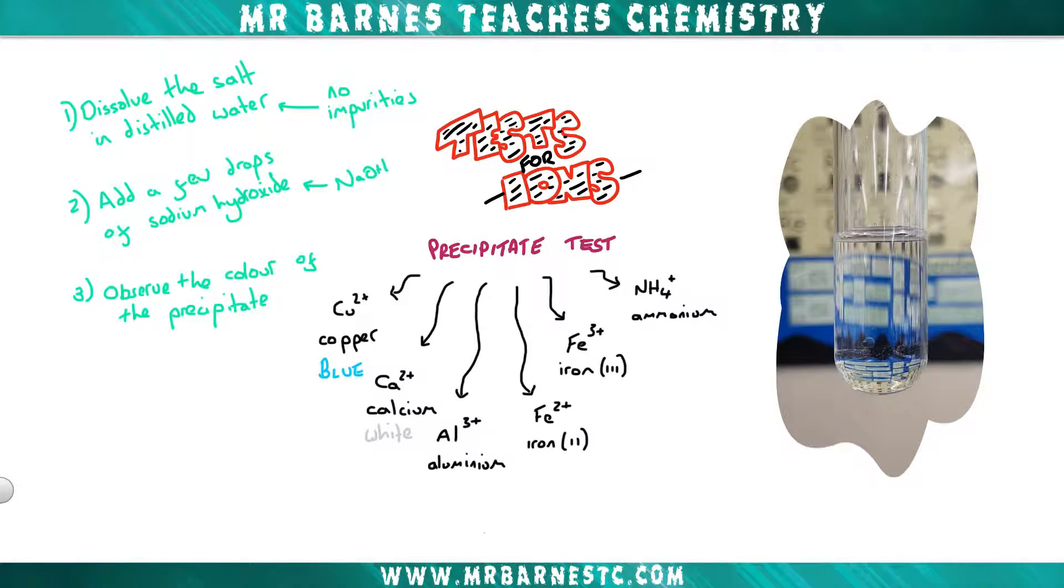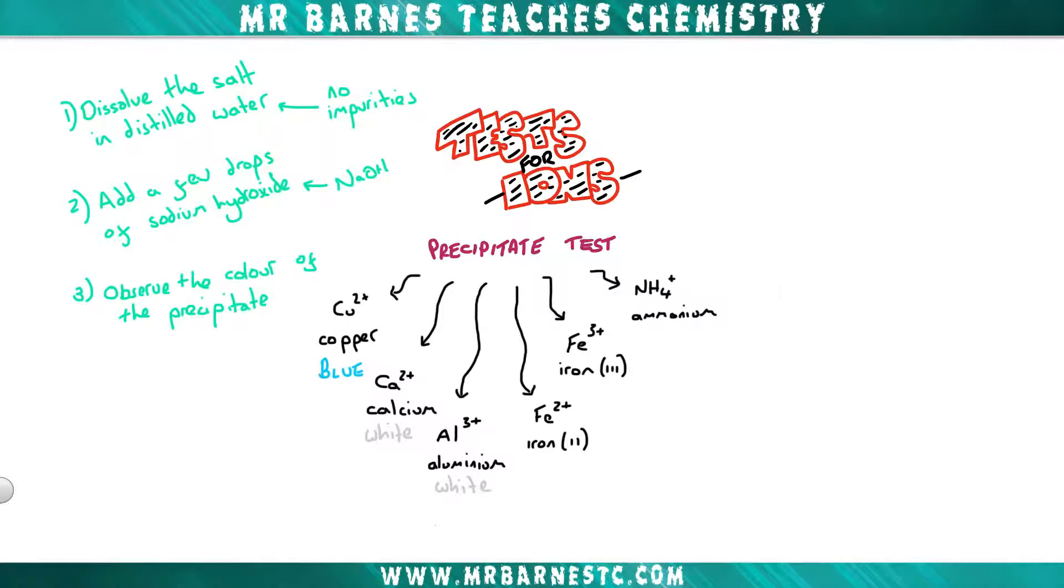On to aluminium. Add in sodium hydroxide, what do we get? A white precipitate. Now there's an issue here. We have two precipitates that are white, which means we do not have a unique test. So we have to do something else to tell the difference between calcium and aluminium.